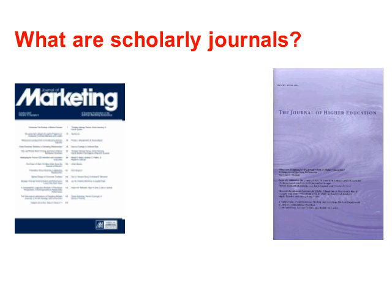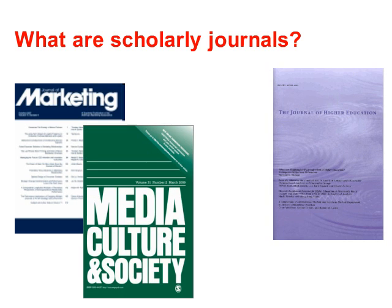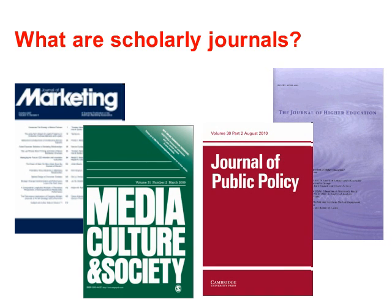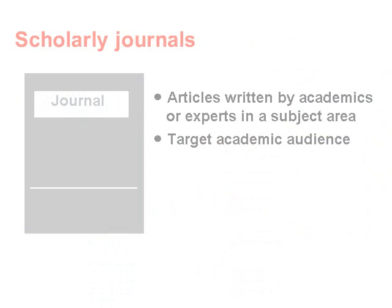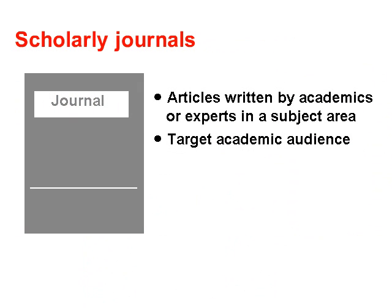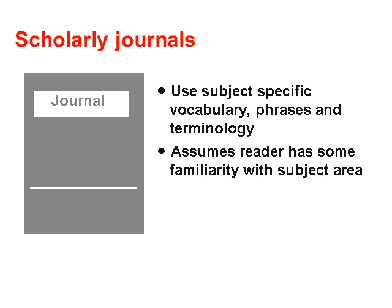So what are scholarly journals, and how do they differ from other sources of information? Scholarly journals contain articles written by academics or experts in a subject area and target an academic audience. The articles use subject-specific vocabulary and terminology, since it is assumed the reader will have some familiarity with the subject area.